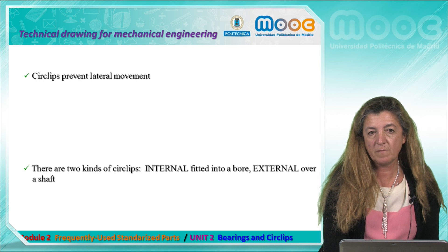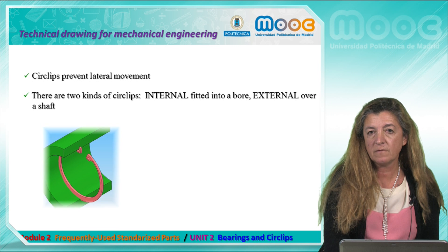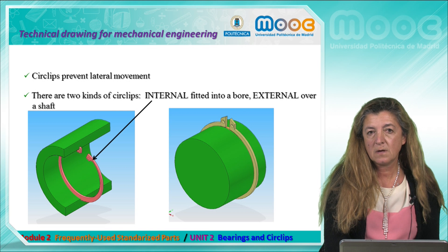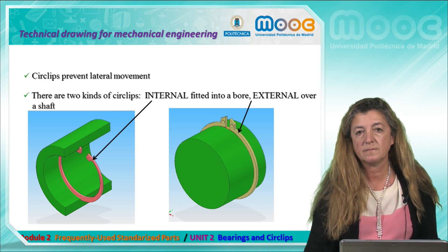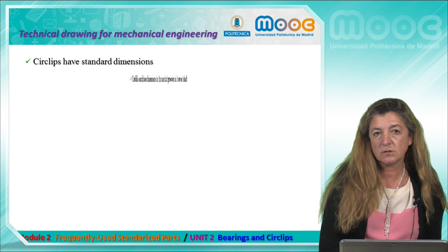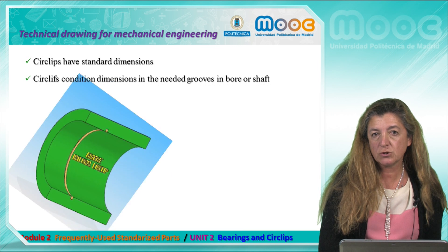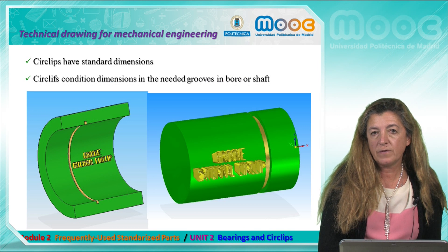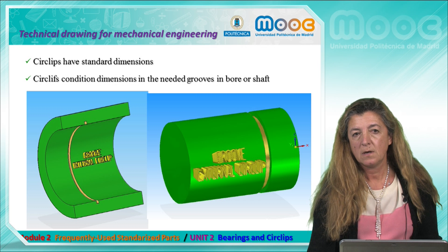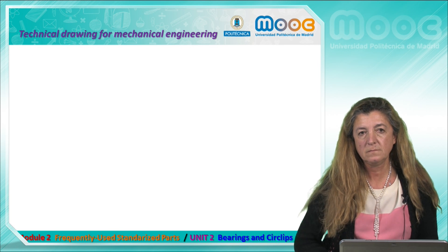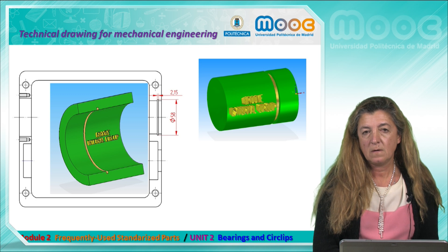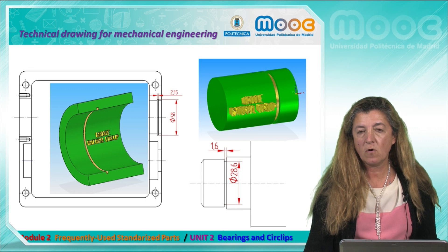Circlips prevent lateral movement. There are two kinds: internal, fitted into a bore, and external, over a shaft. Circlips have standard dimensions and condition the dimensions of the needed grooves on the hub and on the shaft. The bore groove is for the internal circlip; the shaft groove is for the external circlip.